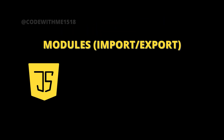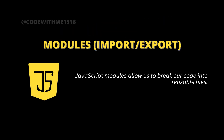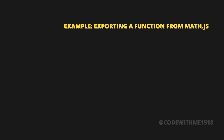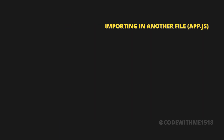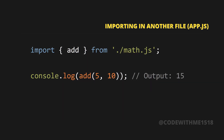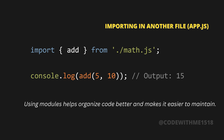Modules: import and export. JavaScript modules allow us to break our code into reusable files. For example, exporting a function from math.js: export function add(a, b) { return a + b; }. Importing in another file, app.js: import { add } from './math.js'; console.log(add(5, 10)); — Output: 15. Using modules helps organize code better and makes it easier to maintain.